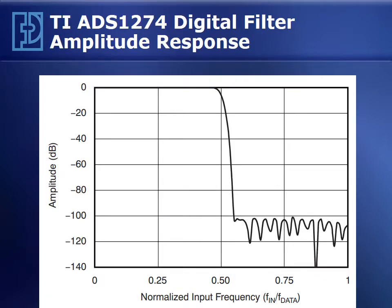Here's an example of a digital filter used inside of a sigma-delta converter — in this case, the Texas Instruments ADS-1274. You can see that this filter has a very flat passband, an extremely sharp transition from passband to stopband, and then a deep stopband attenuation of about 100 dB. These filters are very selective. It's a digital filter, so it's realized as an algorithm on digital data, as opposed to using op-amps, capacitors, and resistors as in analog filters.